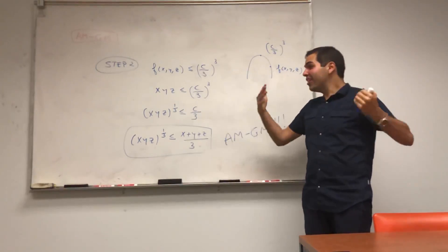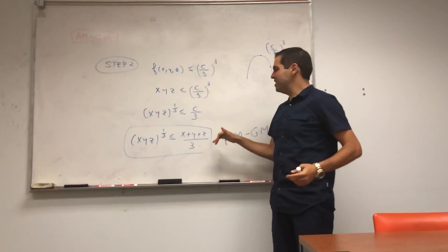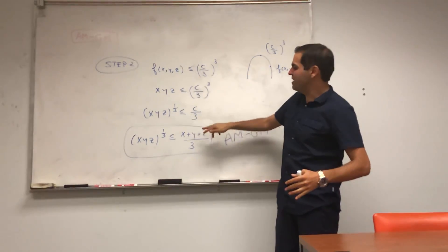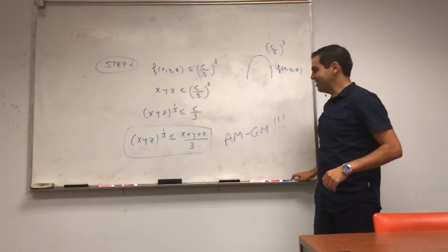And if you want to be fully rigorous, you would be like, you know, let x, y, z be given, and let c be x plus y plus z, and then do this proof, and then you're done.